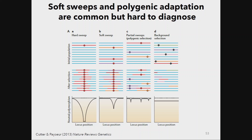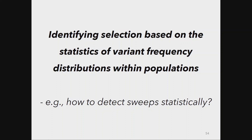We talked about soft sweeps and briefly about polygenic adaptation, which is a topic of much current modeling and empirical research. Polygenic adaptation is the most complex to understand: how do we identify the loci contributing to an adaptive trait when polygenic means many sites contribute? How do we prove those contributions? There might be interactions between loci. And the signal that polygenic selection leaves is much weaker and harder to detect than the characteristic signature of a hard sweep.